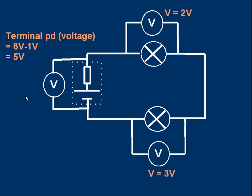It's worth noting that if we measure the voltage of the cell, we can't access the internal resistance — it's part of the internal makeup of the cell. We connect the voltmeter to the terminals of the cell on the outside of the dotted box. What we actually measure is called the terminal PD or terminal voltage. The terminal voltage equals the EMF minus the voltage across the internal resistor, giving a terminal PD of five volts.